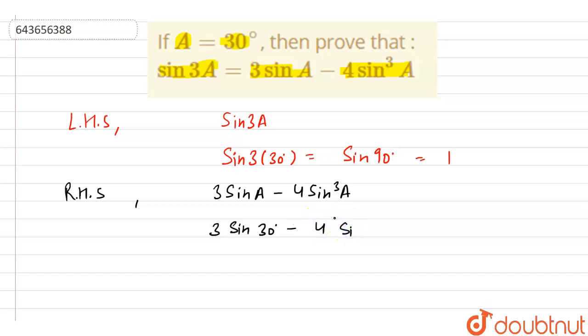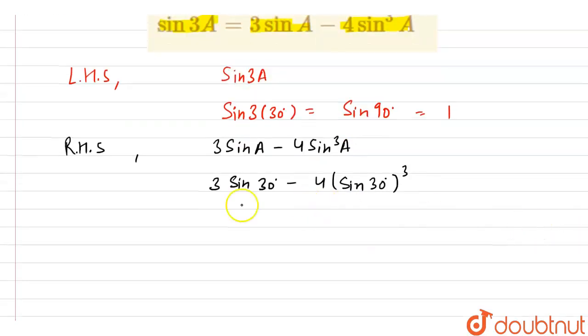So 3 sin 30° minus 4 times sin 30° whole cube. Now if we solve this further, we know that sin 30° equals 1/2.